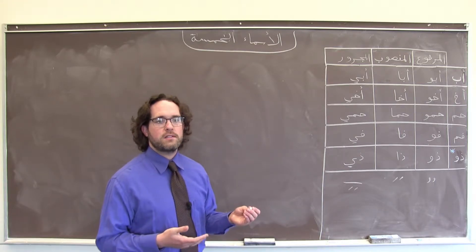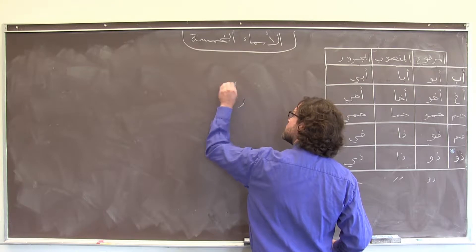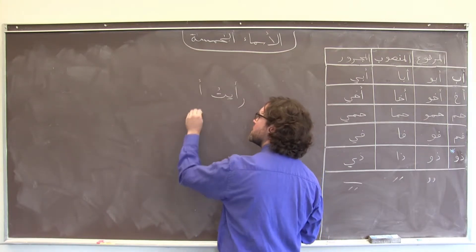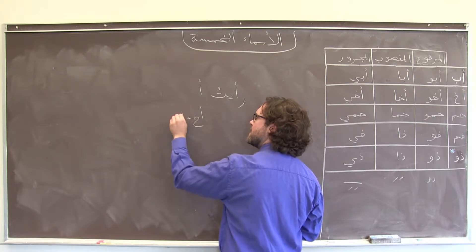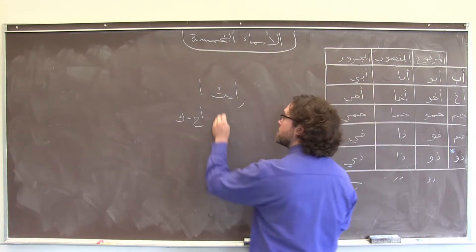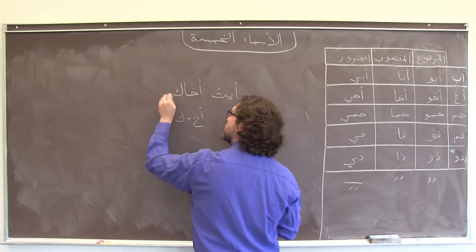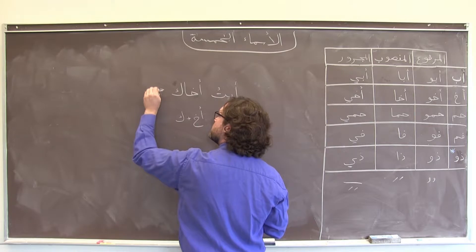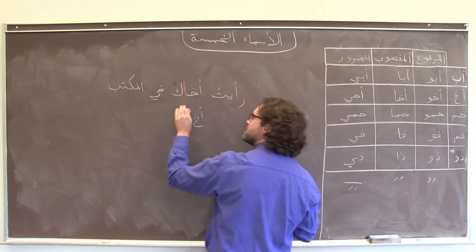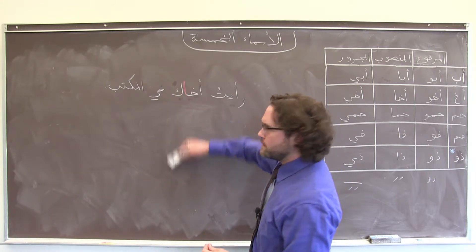For example, if I wanted to say 'I saw your brother at the office' — رأيتُ your brother — ordinarily, if we didn't know any better, we could just take the word أخ and add a كَ. But because أخ is one of these special nouns, I need to demonstrate the case, which is منصوب because the brother is the object of the verb 'saw.' So it would turn out: رأيتُ أخاكَ في المكتب. Because I have that pronoun suffix, it's obligatory in formal written Arabic to include that ألف.